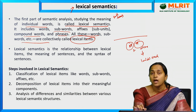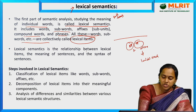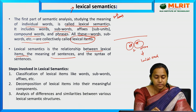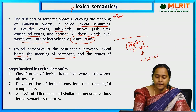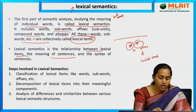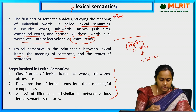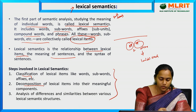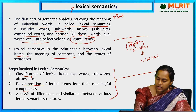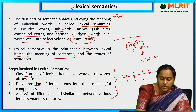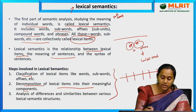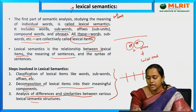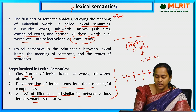Lexical semantics is the relationship between lexical items, the meaning of sentences, and the syntax of sentences. The steps to follow in lexical semantics are: first, classification; then decomposition of lexical items into their meaningful components — take a paragraph, classify it into tokens, then frame the exact sentence; and finally, analysis of differences and similarities between various lexical structures.